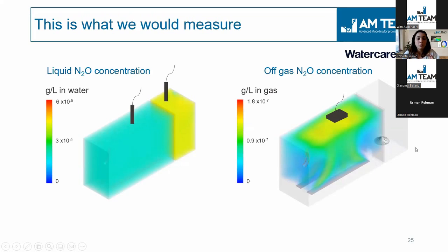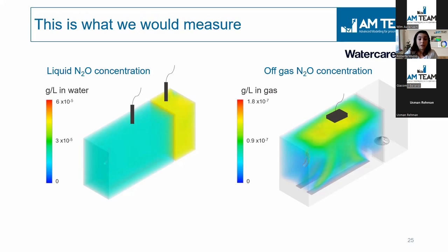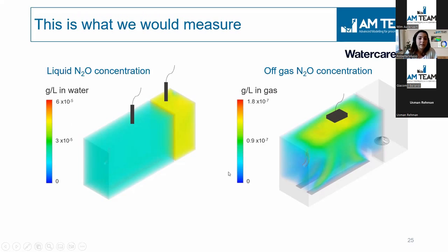This slide shows the liquid N2O concentration and the gas N2O concentration using a 3D CFD simulation — a volume rendering, which is a 3D visualization of N2O concentration inside the reactor. On the left, we see the dissolved liquid N2O concentration: higher concentration in the anoxic zone and lower concentration in the aerobic zone. Red indicates high concentration and blue indicates lower concentration.